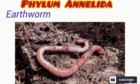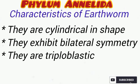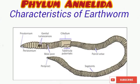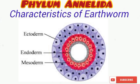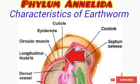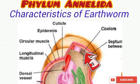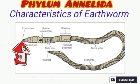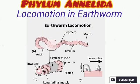The earthworm is the most familiar oligochaete, burrowing in moist, rich soil and emerging at night to explore the environment. Lumbricus terrestris is the most commonly studied earthworm. Earthworms are cylindrical in shape and bilaterally symmetrical — they can be cut into two equal halves through one plane. They are triploblastic, with body layers consisting of the ectoderm, mesoderm, and endoderm. The outer layer of the body is covered with cuticle, and they possess a true coelom. As seen in the diagram, a fleshy prostomium hangs over the mouth of the earthworm.